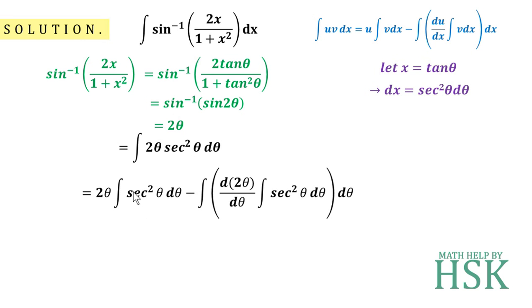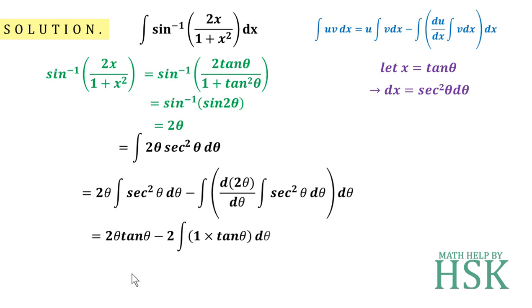Applying the integration by parts formula, I get 2θ × ∫sec²θ dθ minus the integral of [differentiation of 2θ × ∫sec²θ dθ] dθ. The integration of sec²θ is tan θ, and differentiating 2θ with respect to θ gives 2. So this becomes 2θ tan θ minus 2 × ∫tan θ dθ.